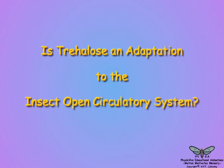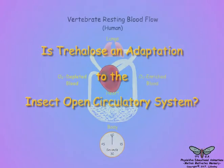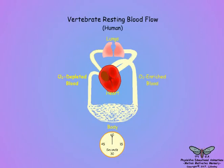Is trehalose an adaptation to the insect open circulatory system? To understand the dynamics of the insect circulatory system, let us compare it to vertebrate circulation using the human system as an example.